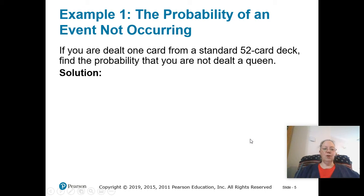You are dealt one card from a standard 52-card deck. Find the probability that you are not dealt a queen, not dealt a queen. Let's think of it a couple different ways. We can think of it kind of the more difficult way, and then we can think of it as the quote-unquote easier way.